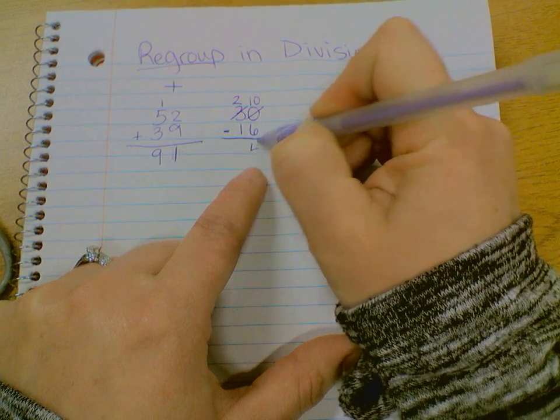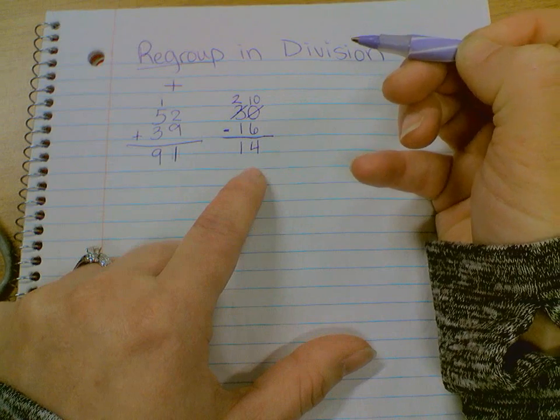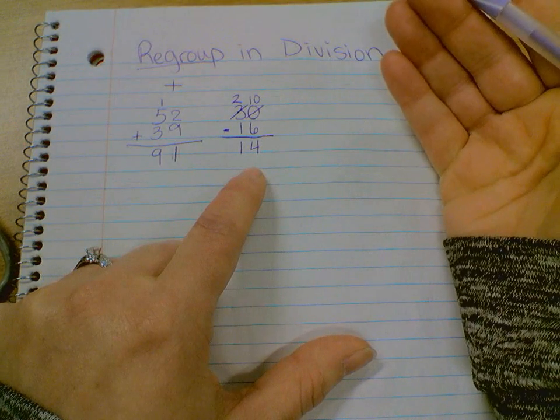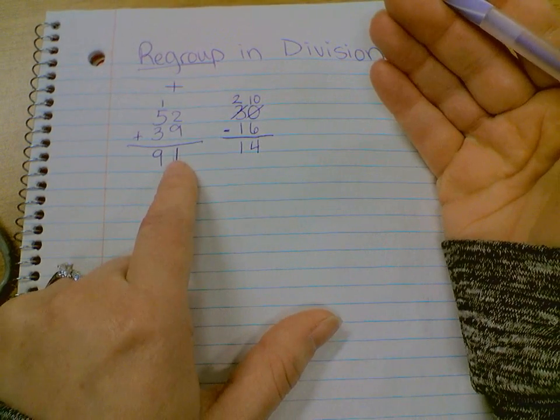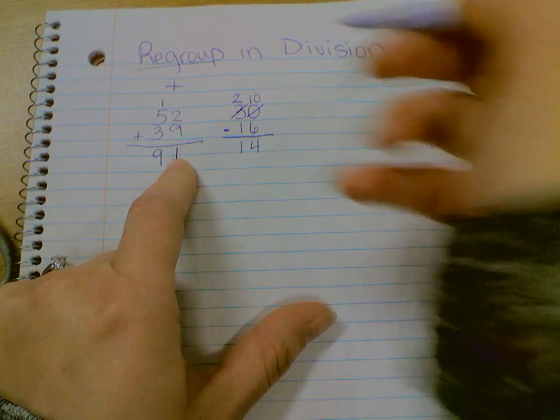Solving that out, it gives me 14. Multiplication, regrouping is very similar to what we do with addition, where we carry it to the next place over.